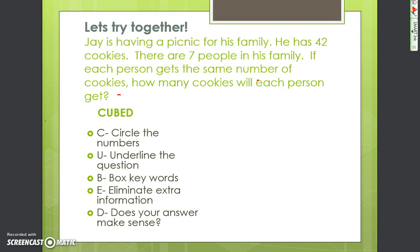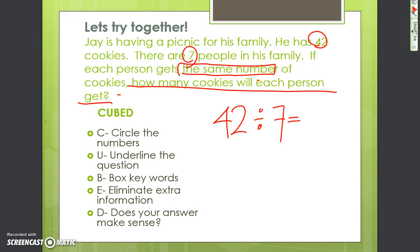Alright, Jay is having a picnic for his family. He has 42 cookies. There are 7 people in his family. If each person gets the same number of cookies, how many cookies will each person get? We know we have 42 delicious cookies and 7 people in his family. How many will each person get?